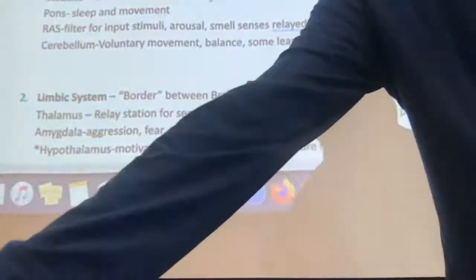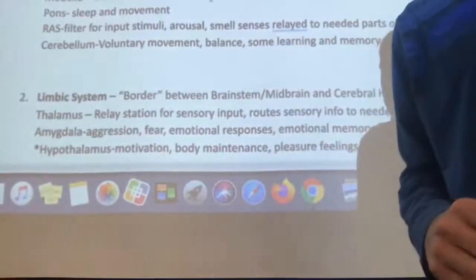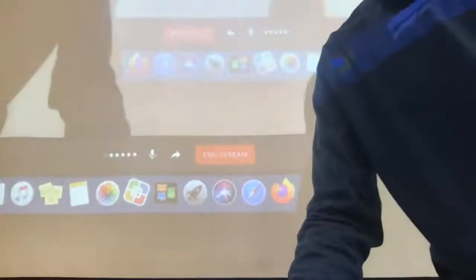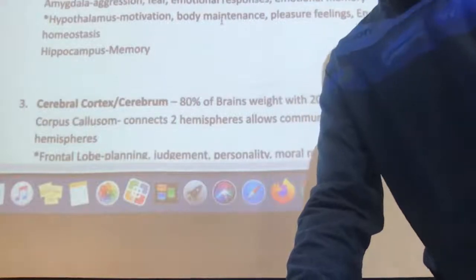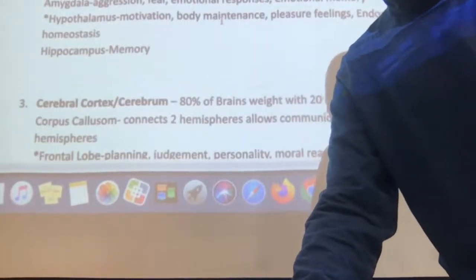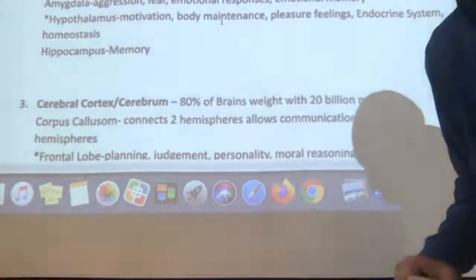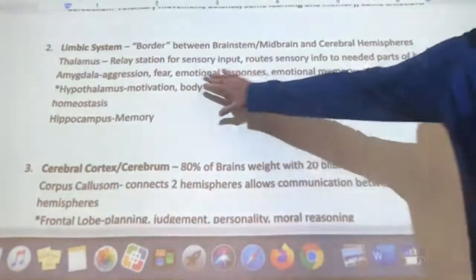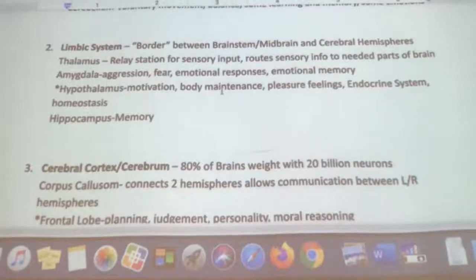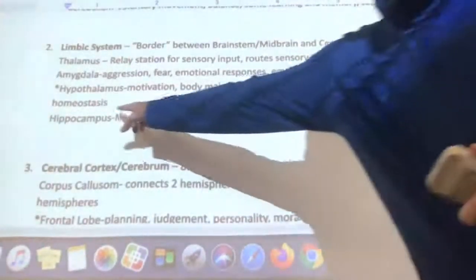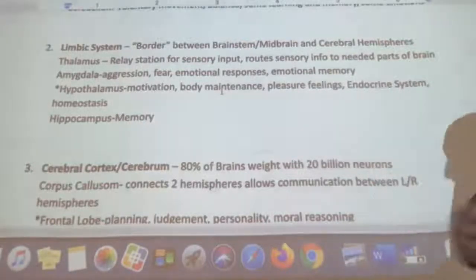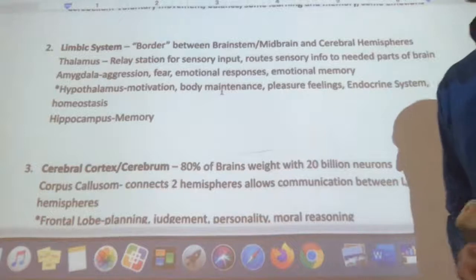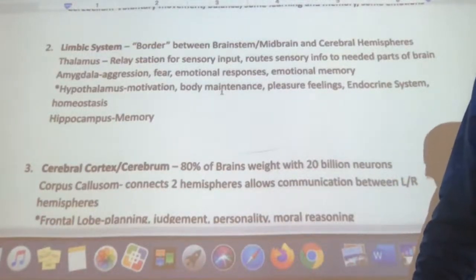The hypothalamus is probably one of the most important structures in the brain for psychology. It controls motivation and body maintenance — that internal equilibrium called homeostasis — and pleasurable feelings. It helps with dopamine in the pleasure pathway and controls our endocrine system, which is the production and delivery of hormones throughout our glands. It's a big one in psychology as far as behavior and mental processes go.